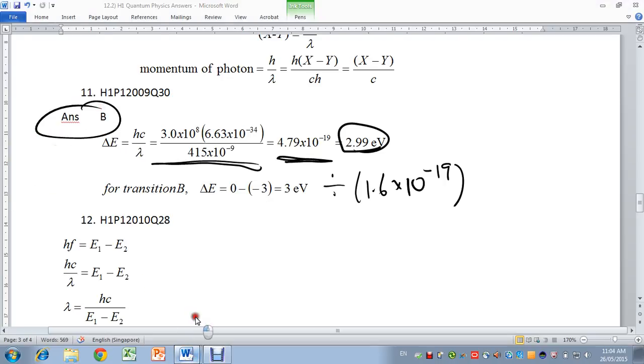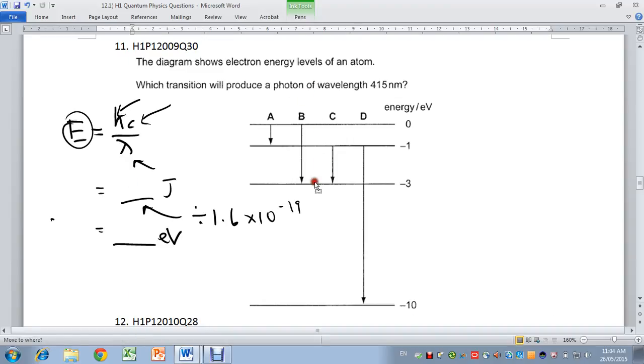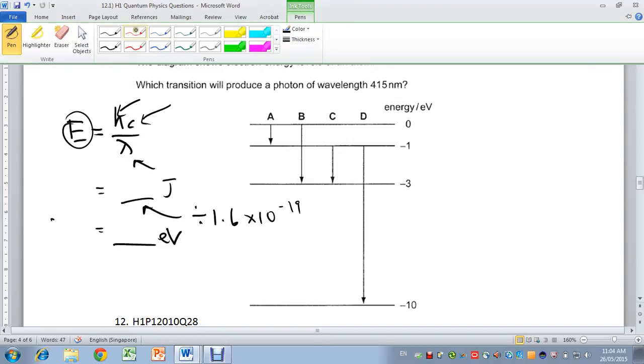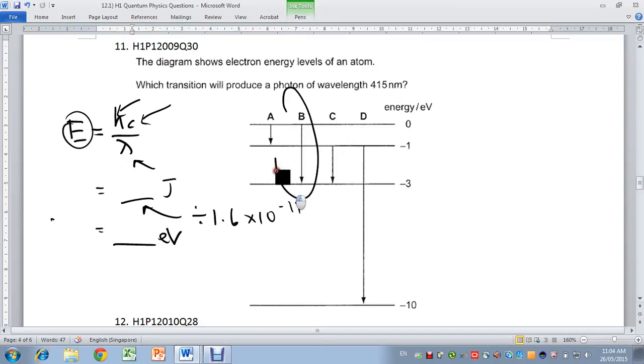Look at that question again. B will give you the transition from 0 to negative 3, which will produce a photon of energy 3 eV, which corresponds to the wavelength of 415 nanometers. The answer is B.